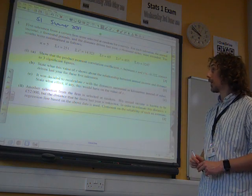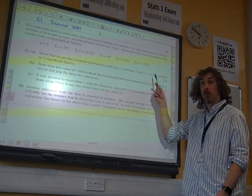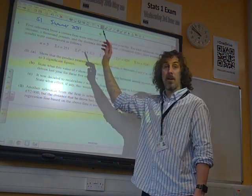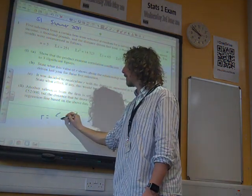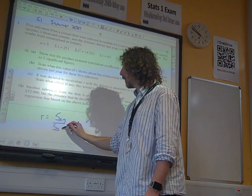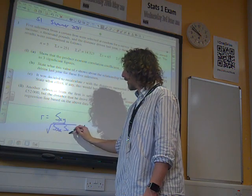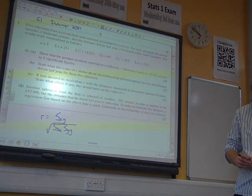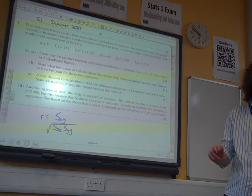Show that the product moment correlation coefficient R between X and Y is minus 0.122. They've even given us a show that, so we're looking for that as being our answer. On the formula sheet, it tells you that R is SXY over the square root of SXX times SYY. That's the value of R. A bit rusty on this one. And so we need to work out these things.